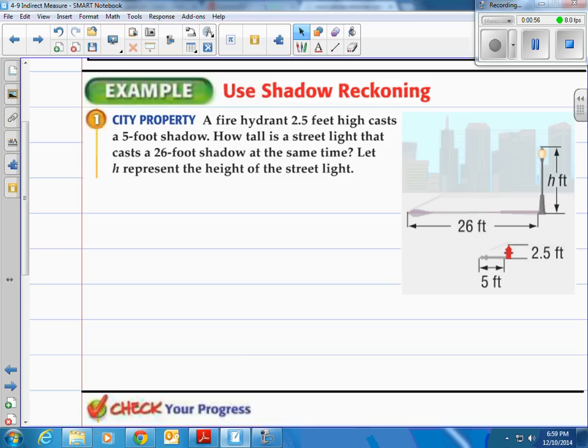Let h represent the height of the street light. You can see the picture there. See the shadow and you see the height of the lamp is actually h. That's what we're trying to find. But I want you to recognize that when we have shadows, we're actually creating a triangle. That's in red there on both the fire hydrant and the lamp.